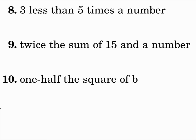Number eight: three less than five times a number. Less than is subtraction, and it's three less than, so we're subtracting three from something. What are we subtracting it from? Five times a number, so 5x. The answer is 5x minus three. Notice: three less than five times a number — the three goes after the subtraction sign.